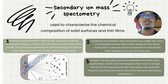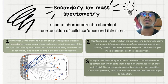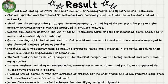Third is analysis — the secondary ions are accelerated towards the mass spectrometer, which sorts them based on their mass-to-charge ratio. The mass spectrometer then detects and quantifies these ions, providing information on their elemental and isotopic composition.